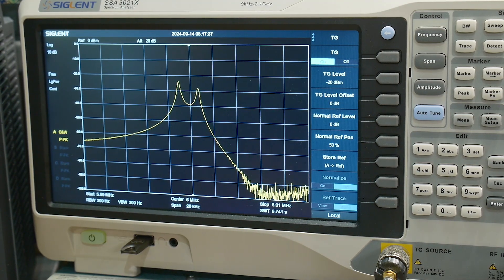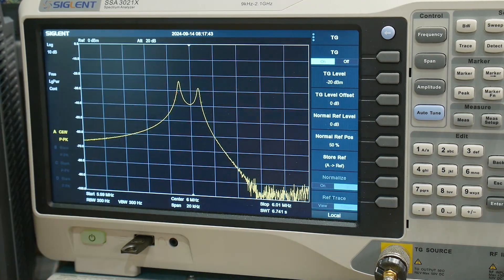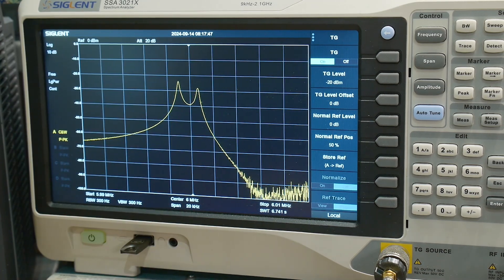Usually Bode plots are done kind of in the audio range, but I don't see any reason, especially with a one gigahertz oscilloscope, that you couldn't do a Bode plot on something at six megahertz. I mean, that's almost DC for this fancy oscilloscope.